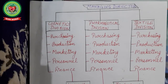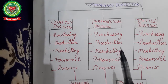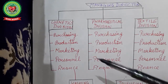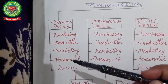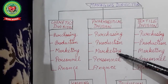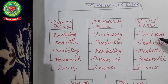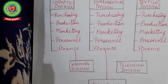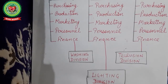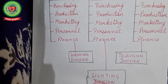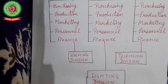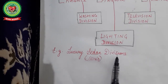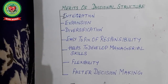When we talk about product divisionalization, suppose the company has three products — cosmetics, pharmaceutical, and textile. It may have further sub-divisions: purchasing, production, marketing, personnel, and finance — the same sub-departments follow for all three product divisions separately. If they extend their products, say adding a washing machine division, television, or lighting division, the sub-departments — purchase, production, marketing, personnel, and finance — remain the same. A good example of product divisionalization is luxury sedan divisions and SUVs.